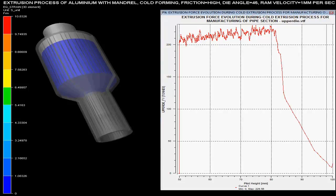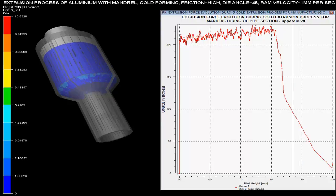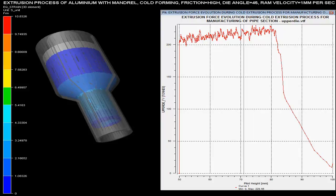In this video you can see the extrusion process of aluminum pipe which comprises a mandrel in the extrusion die. Different parameters are controlled based on given specifications.